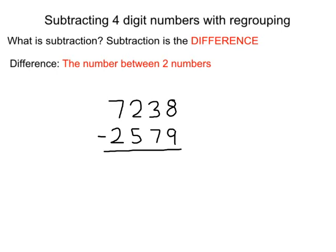So basically, if you're given a subtraction question, such as the one that's written over here, we have 7,238 minus 2,579. The difference is going to be the number that's in between these two. And that's what subtraction is. You're trying to find anything that's in between these two numbers.